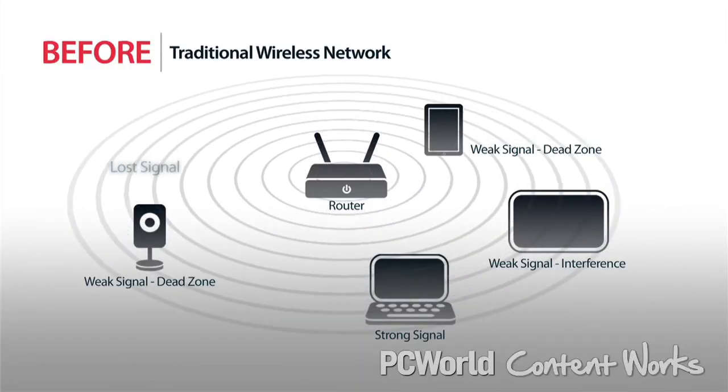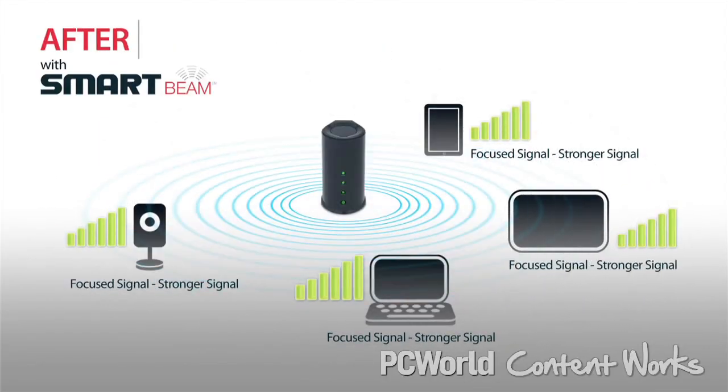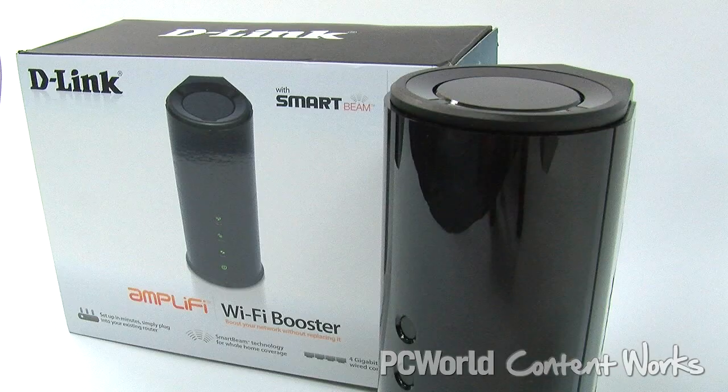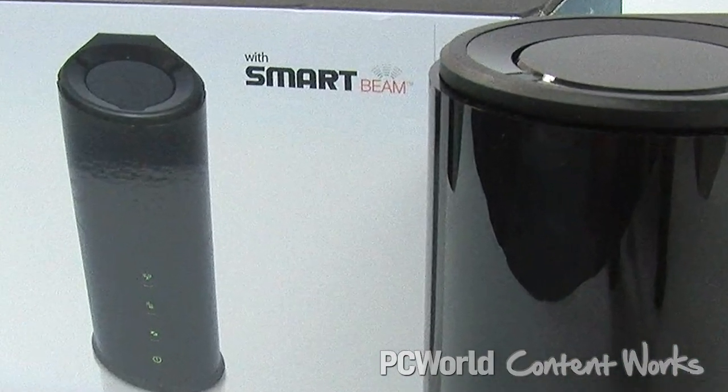Most wireless routers transmit a Wi-Fi bubble in all directions, missing devices that are out of range or blocked by thick walls, wood, stone, or metal. But D-Link's Smart Beam technology locates your wireless devices and aims a laser-like stream of bandwidth directly at them.